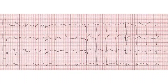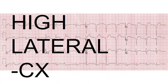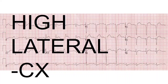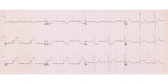This is a high lateral — another easy win as we break into this. If you follow the cursor in leads one and AVL, there is absolutely ST segment elevation. And you can see in three and AVF beautiful ST segment depression — everything we need to confirm there's a blocked coronary artery. If you don't fully understand the vasculature, I encourage you to go back to the understanding 12-lead series. A left circumflex blockage is usually involved when you see this pattern.